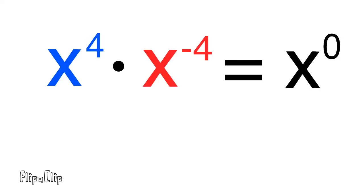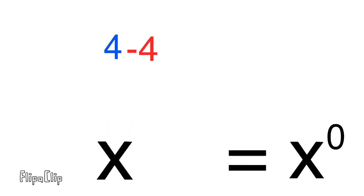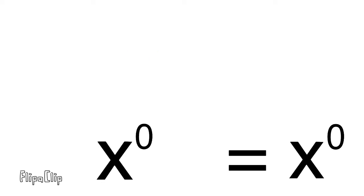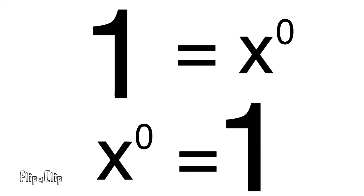Let's show another example. They have the same base number, so we can add the exponents — in this case adding a negative four, which would be four minus four. Four minus four is zero, making the exponent zero. Since one equals x to the power of zero, then x to the power of zero equals one.